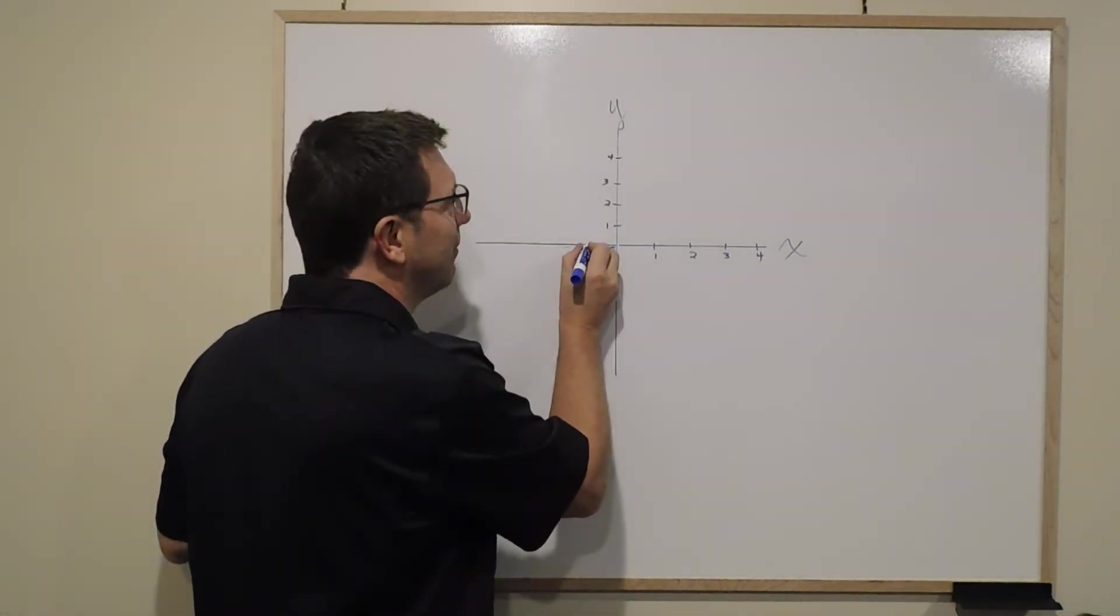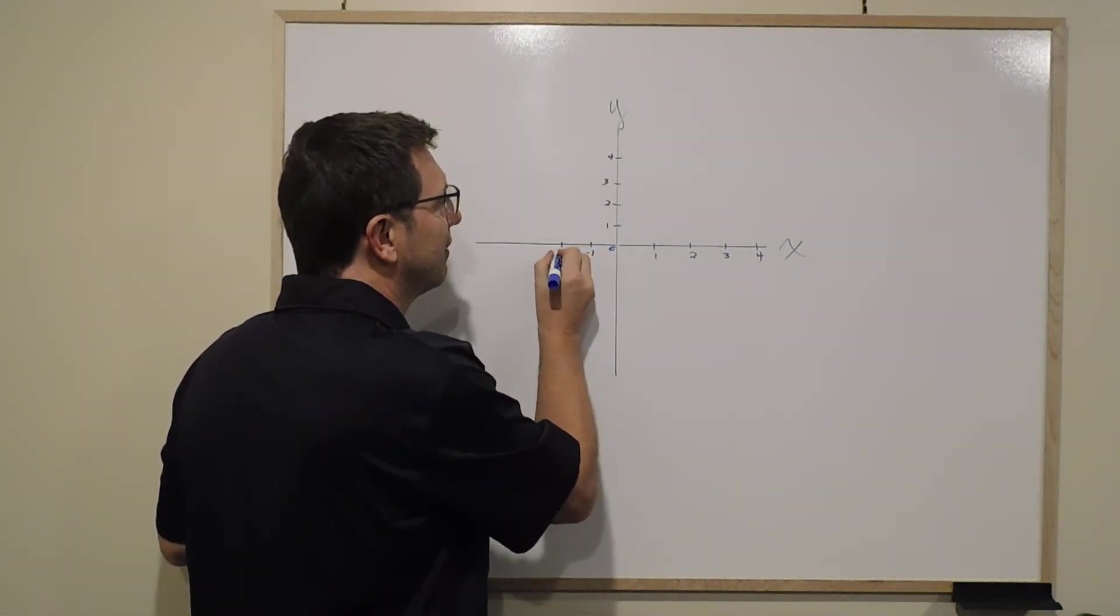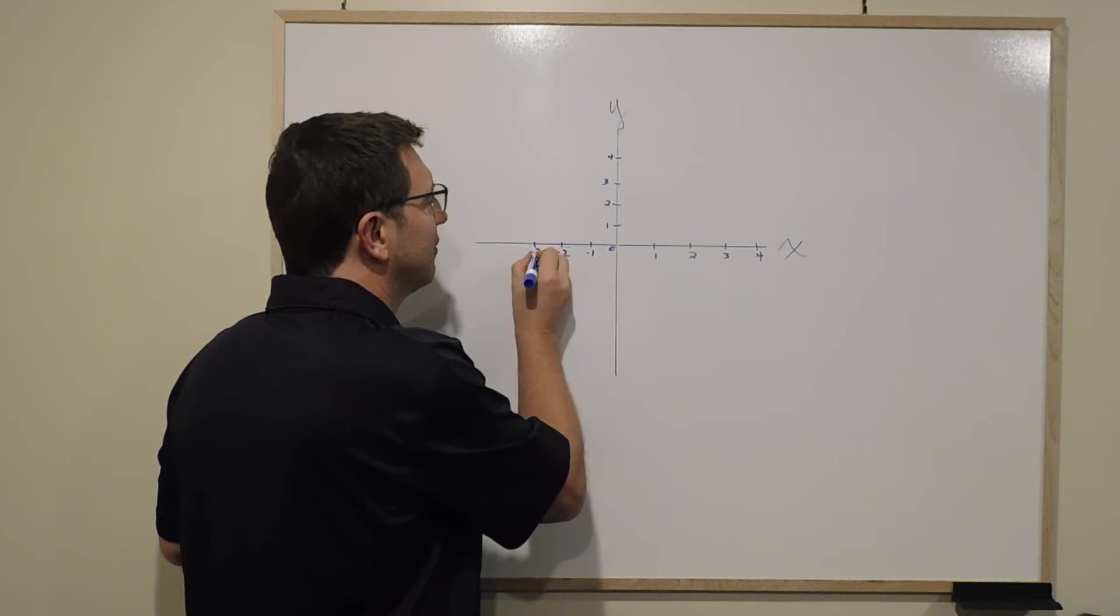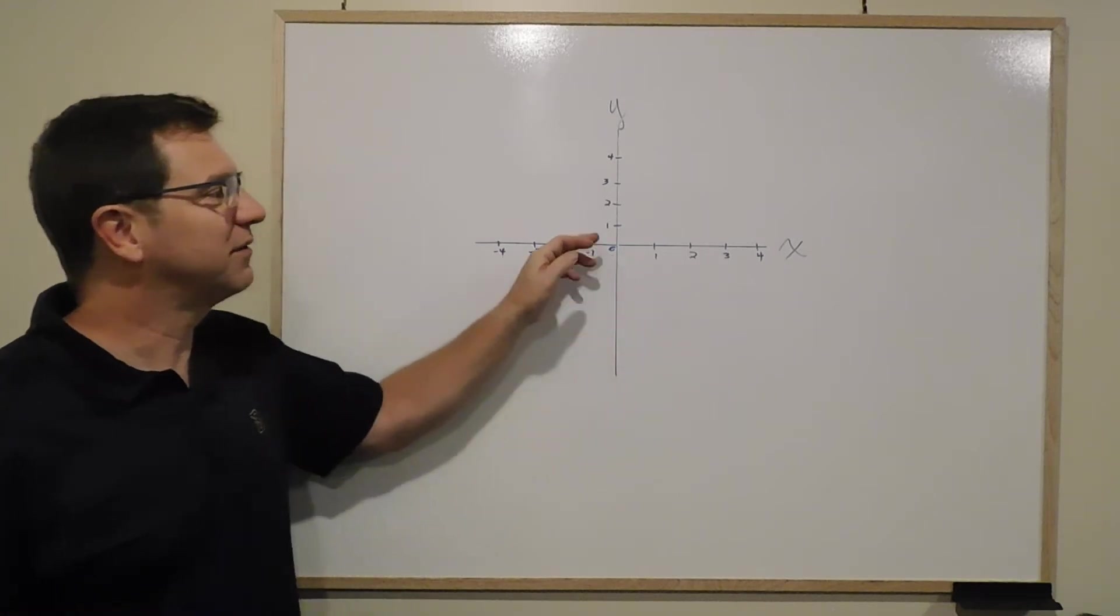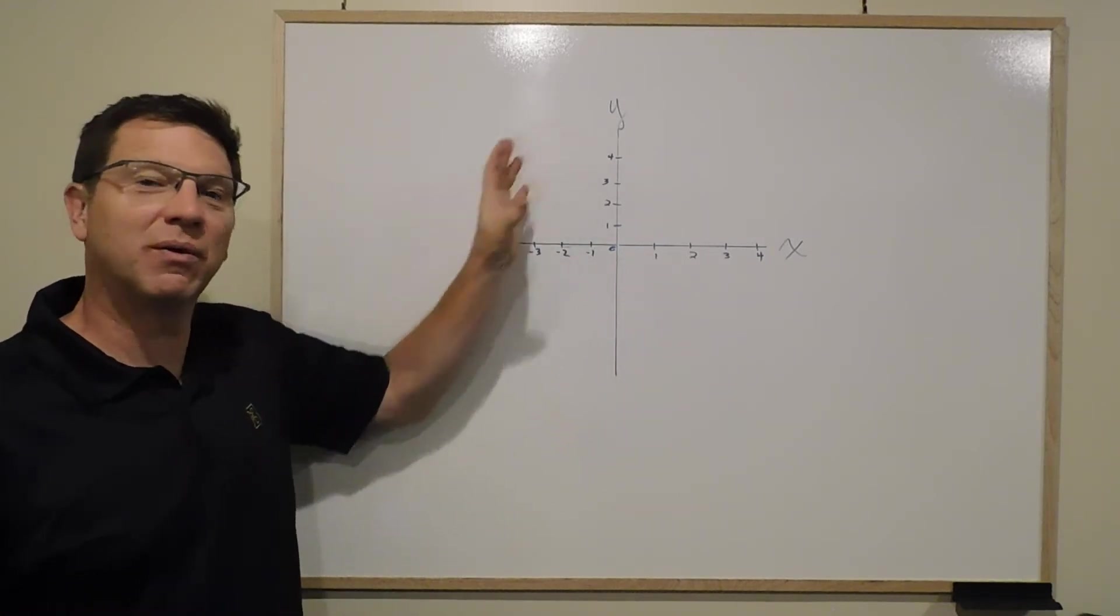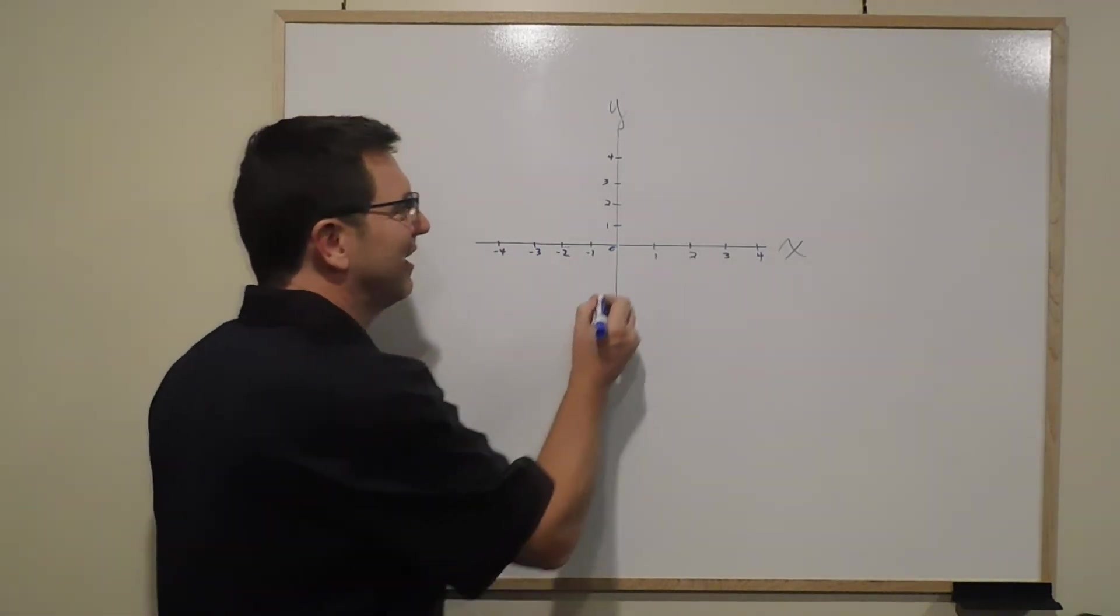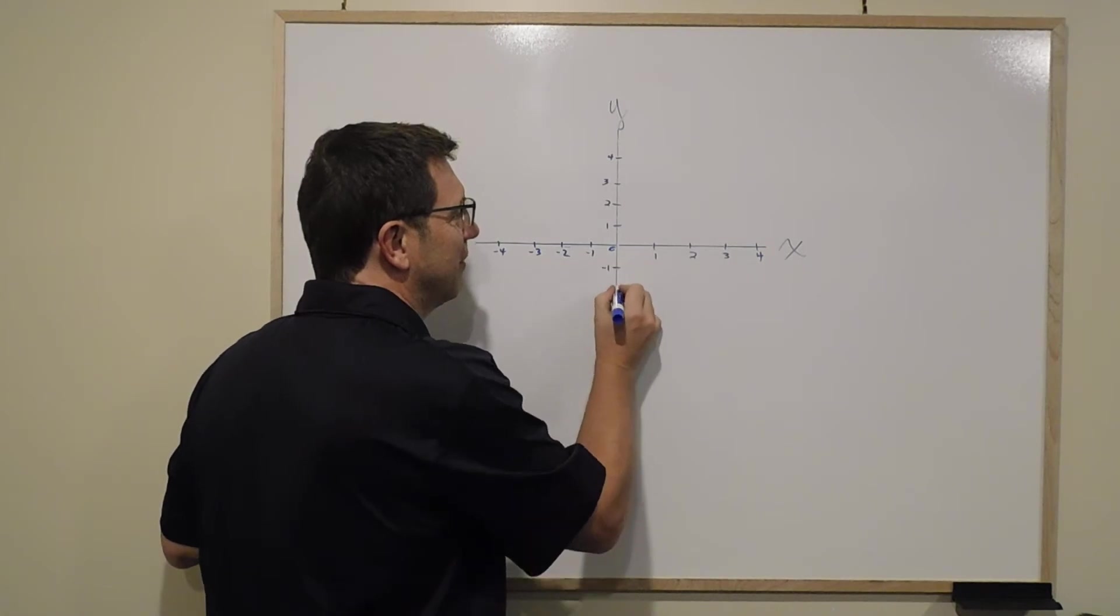It's important to label these so we know what the scale is, because what if this goes 1, 2, 3, 4 and this goes 5, 10, 15, 20? We need to know that. We'll just finish that up.